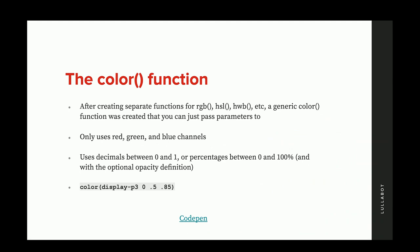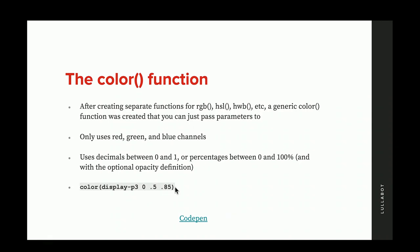There's also a generic color function that sticks within the RGB color space. With so many different functions for RGB, HSL, and HWB, they created a generic color function you can just pass parameters to. This one uses the red, green, and blue channels with decimals between 0 and 1 — or percentages. You write 'color', then pass the color space in. For example, I'm using DisplayP3 here, which is a color space that's not sRGB, and then pass the red, green, and blue values.